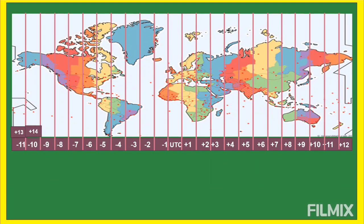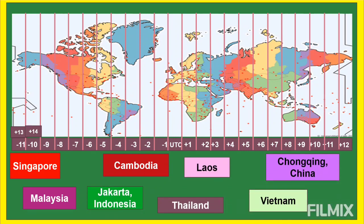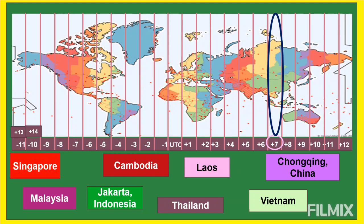Next is GMT+7, seven hours ahead of UTC. Comparing to Philippine time, the Philippines is just one hour ahead of these countries. These countries are mostly Southeast Asian countries: Singapore, Malaysia, Cambodia, Jakarta (Indonesia), Laos, Vietnam, Thailand, and Chongqing (China). There are still other places under GMT+7 that I didn't mention.